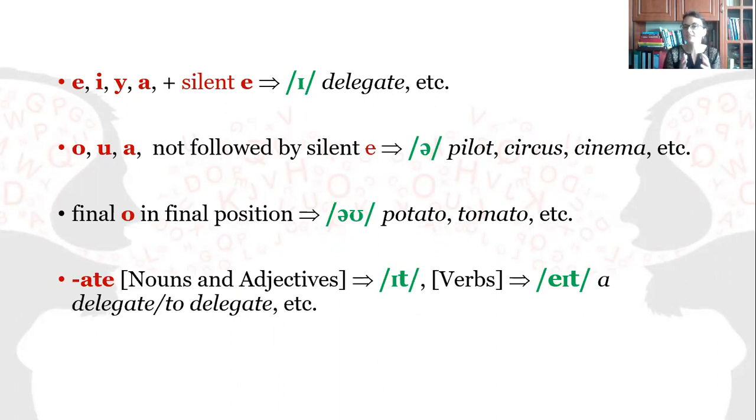The suffix -ate for nouns and adjectives is pronounced as it, whereas for verbs as ate. A delegate to delegate.